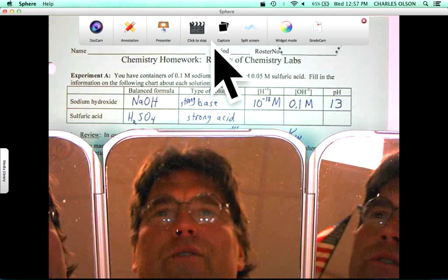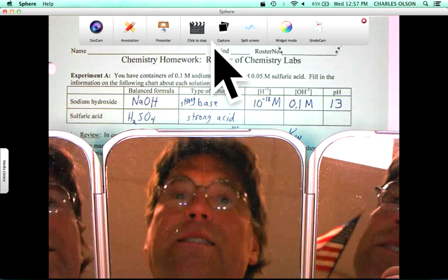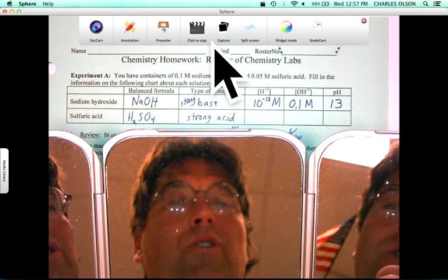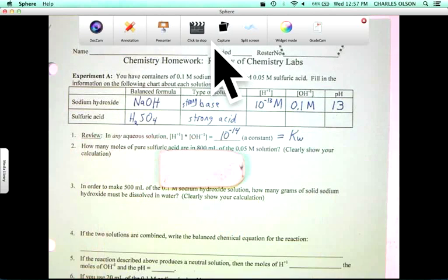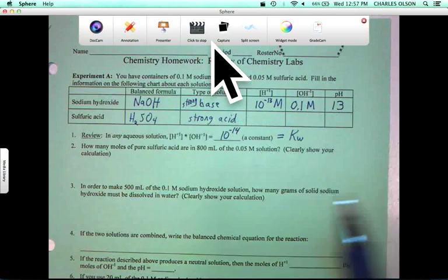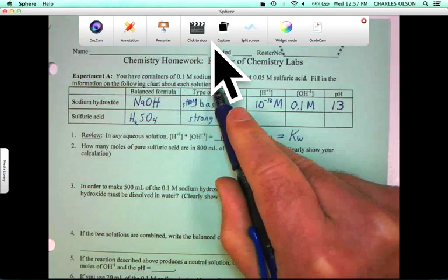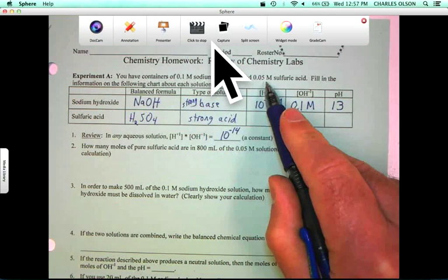We are going to review an acid-base neutralization lab, and we've got some calculations to do. Here we see we've got 0.1 molar sodium hydroxide and 0.05 molar sulfuric acid.